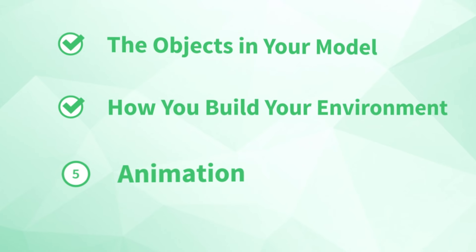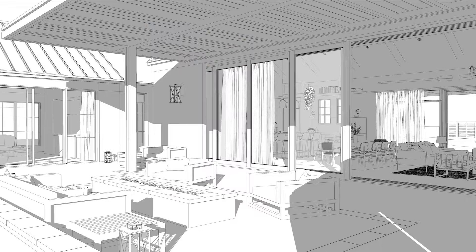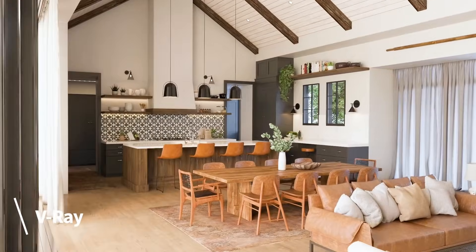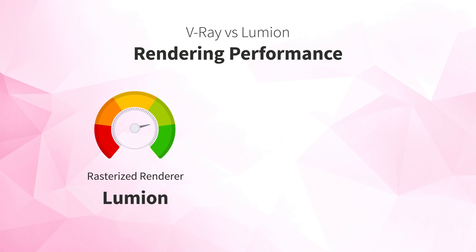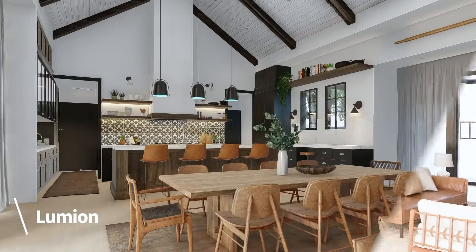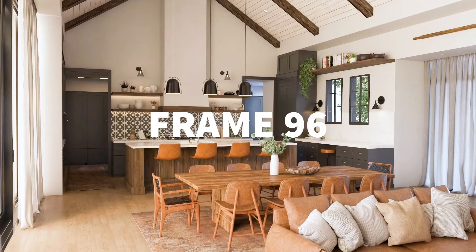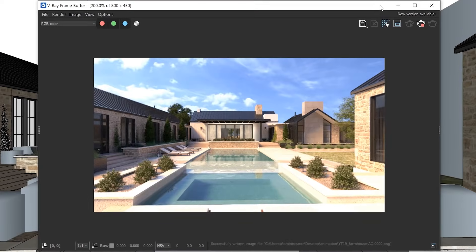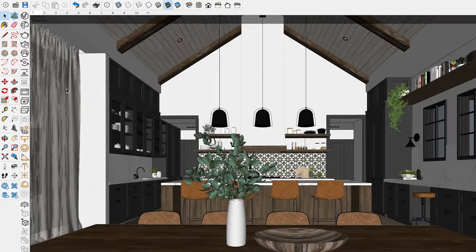Number five: animation. Walkthrough and flythrough animations in SketchUp are an amazing way for architects and interior designers to showcase their models to clients, and with V-Ray and Lumion you can take these to the next level. You'll face the same rendering performance tradeoff as with still renderings — speed versus photorealism. You'll get animations faster out of Lumion, but higher photorealism with V-Ray. With animation, you're essentially creating a rendering for every single frame. A walkthrough just a few seconds long could mean dozens, if not hundreds of images to render. This is where a rendering service like Chaos Cloud can really come in handy and save you a ton of time.